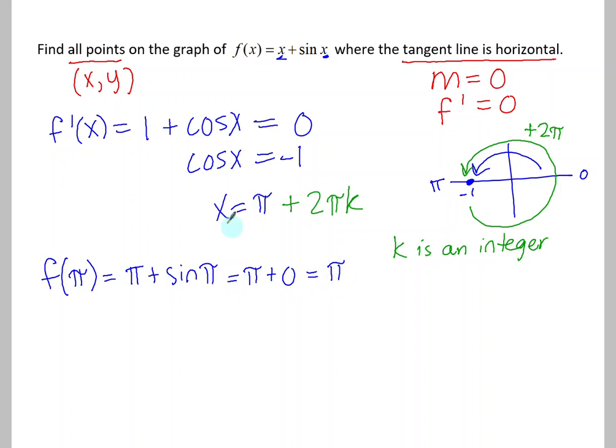But remember that the x value is not just pi, it's pi plus 2 pi k. So really we want to think about if we plug in pi plus 2 pi k into the original function. So instead of x, we're plugging in pi plus 2 pi k, plus sine, again instead of x, we're plugging in pi plus 2 pi k.